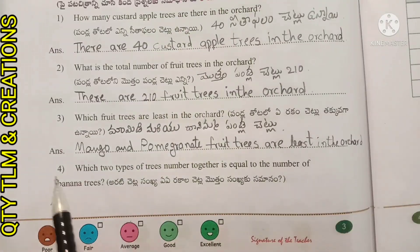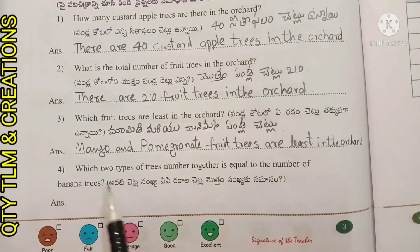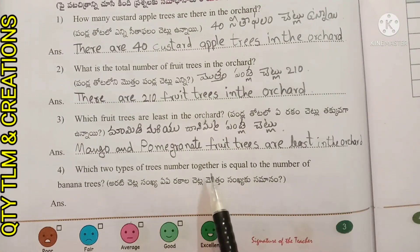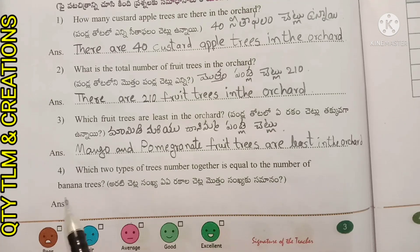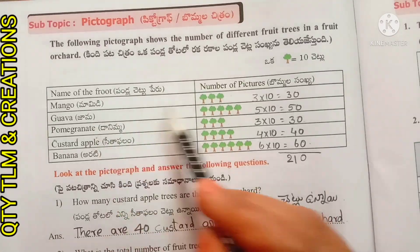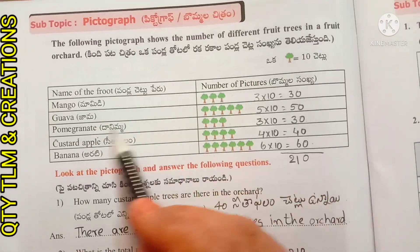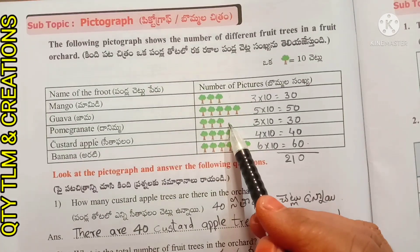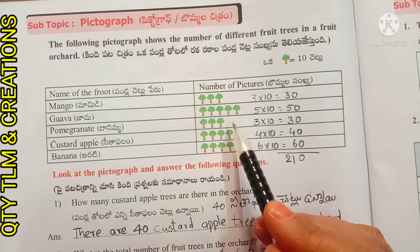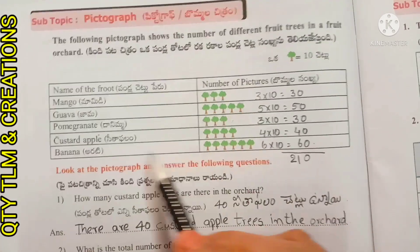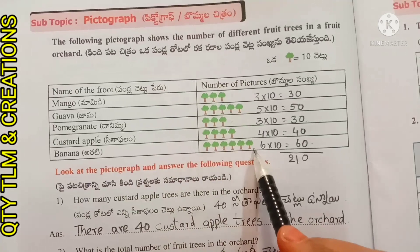Next question: which two types of trees together equal the number of banana trees? Mango trees are thirty and pomegranate trees are thirty, so mango and pomegranate trees together equal the number of banana trees, which is sixty.